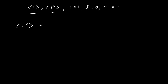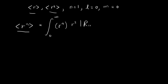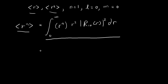For the rest of this video, we're going to focus on finding the expected value of r to the power of n. To evaluate this expected value, we take the integral from 0 to infinity of r to the power of n — the expression we want the expected value for — multiplied by the probability density function of r, which is r squared times the absolute value of R₁₀ squared, then dr.